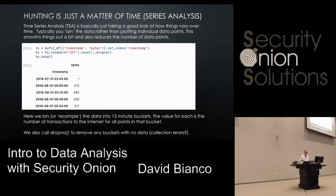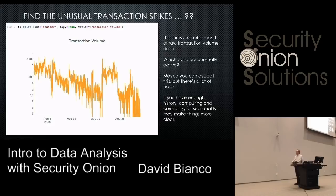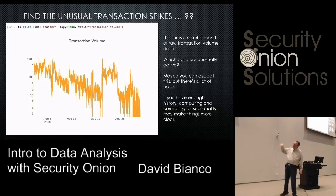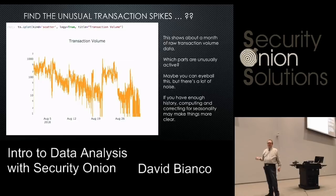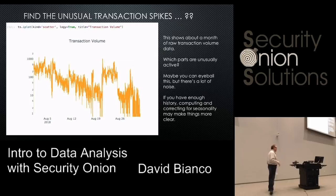So now it should be easy to find the unusual spikes, right? Not quite — this is still super noisy. There's a downward trend, things at the beginning of the month had higher transaction volumes than the end. You can't do an apples-to-apples comparison across all days of the month. There's substantial noise, and it's hard to tell which spikes are expected versus not, which are even real spikes versus just noise.